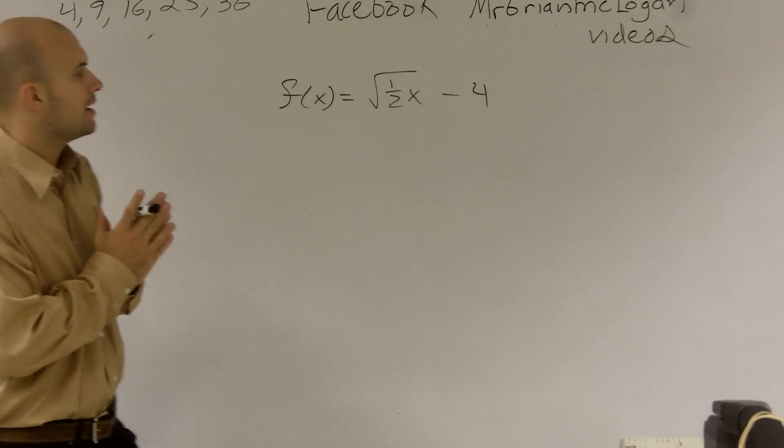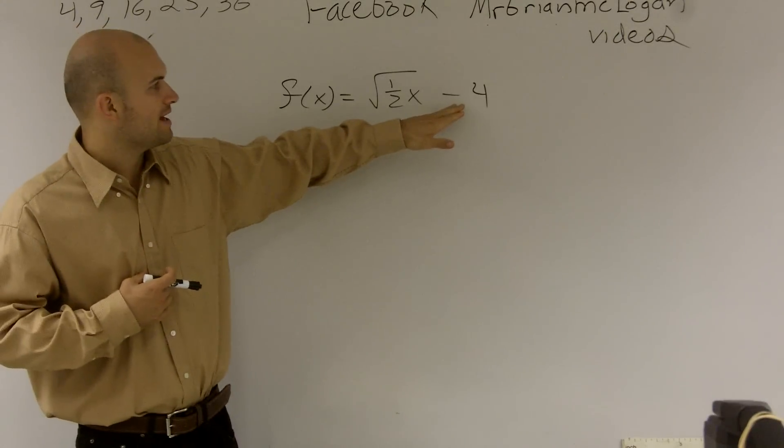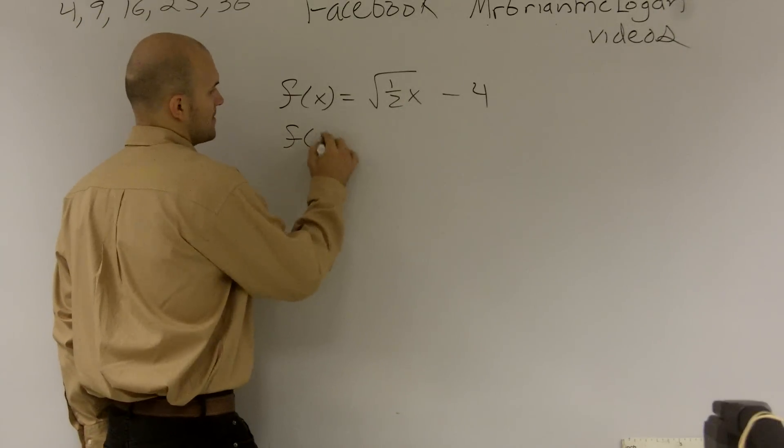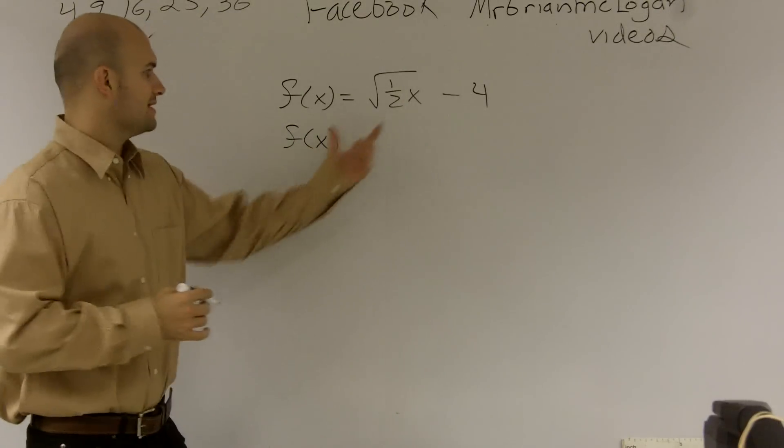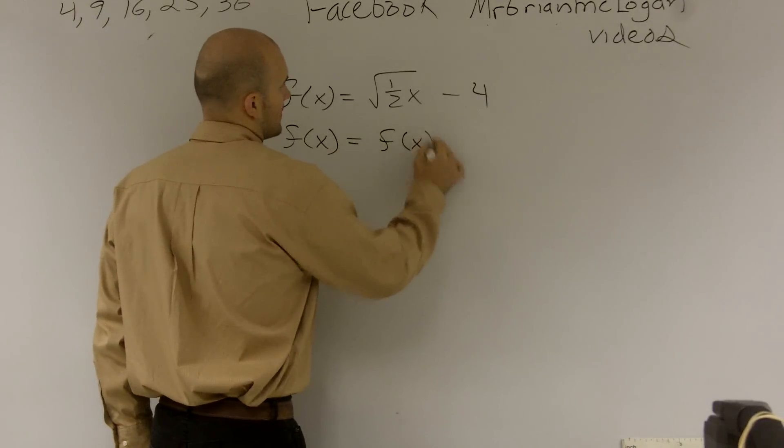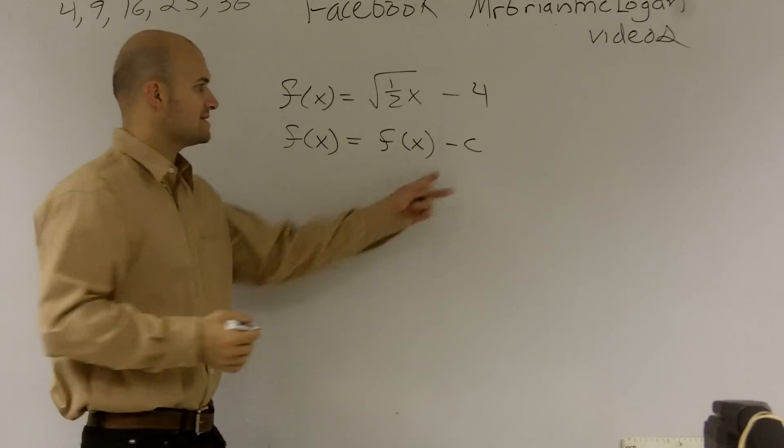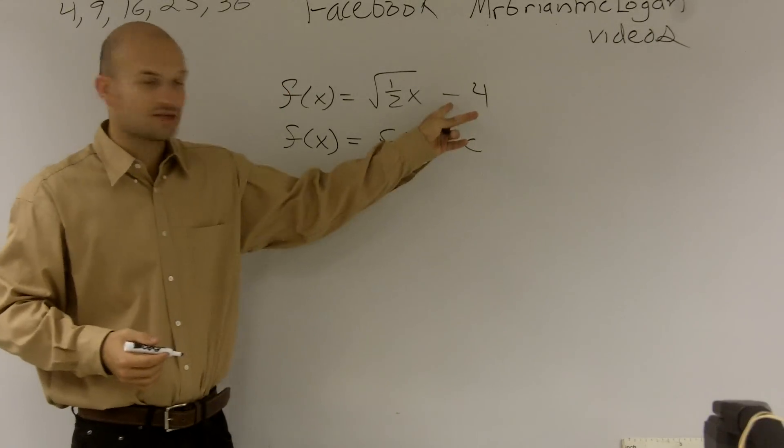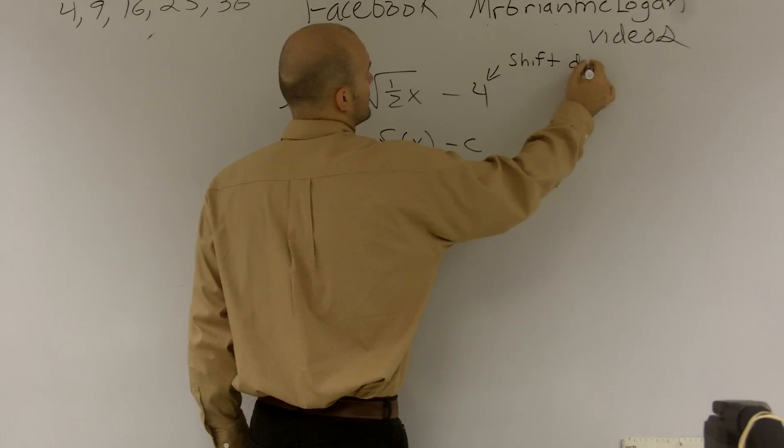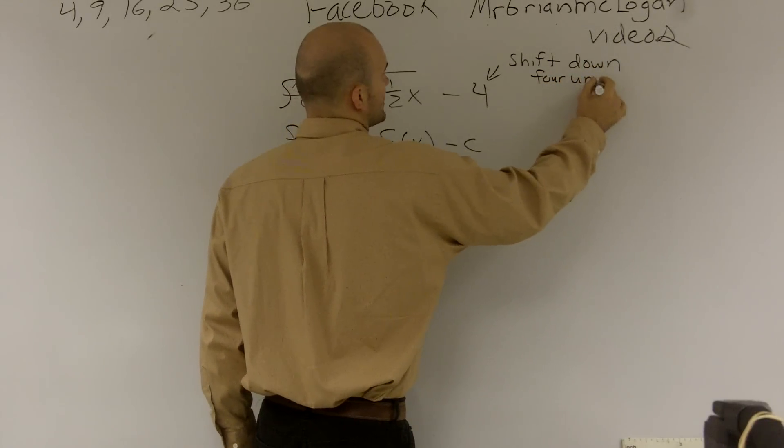A couple things we need to look at. I really want to focus on the stretching that's going on, but we do know that when we have our function f(x), if we do a minus c, that means that's going to be a vertical shift downward. So we're actually going to be shifting our graph down 4 units.